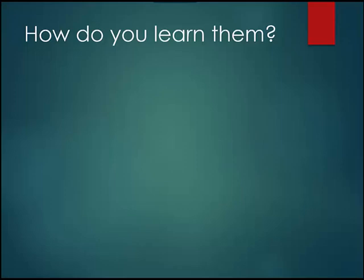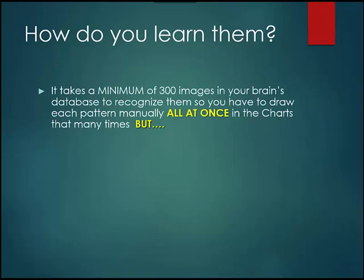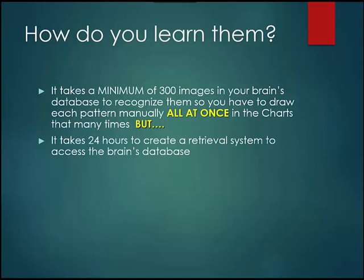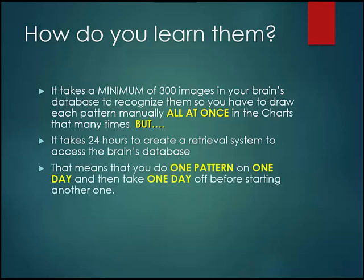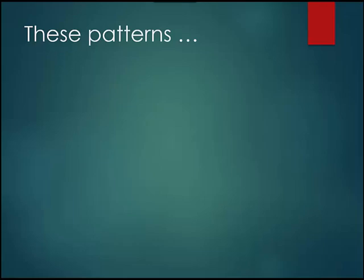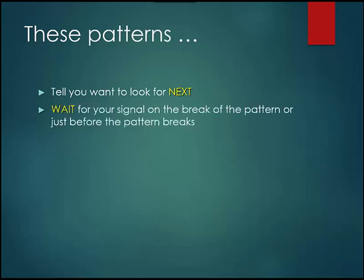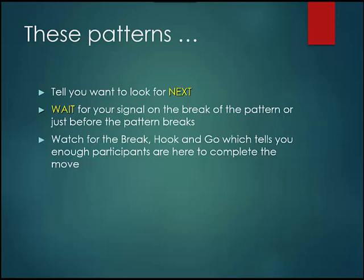So how do you learn them? It takes a minimum of 300 images in your brain's database to recognize them. So you have to draw each pattern manually in the charts that many times. It then takes 24 hours to create a retrieval system to access the brain's database. That means you do one pattern on one day — all 300 of them — and then take one day off before starting another pattern. That takes 48 hours to do one pattern. These patterns tell you what to look for next. Wait for your signal on the break of the pattern, or just before the pattern breaks if you've recognized it. Watch for the break, hook, and go, which tells you enough participants are here to complete the move.